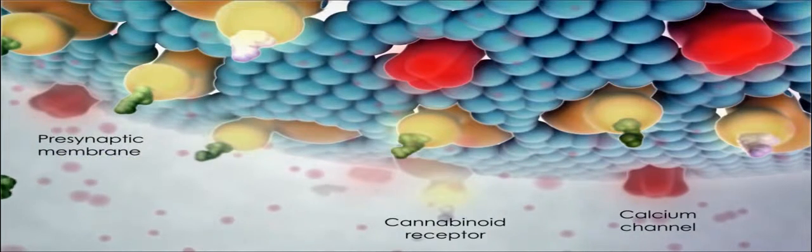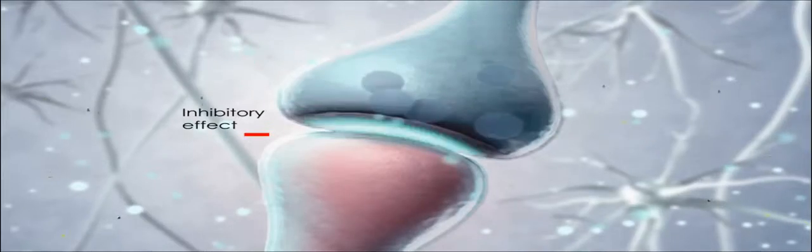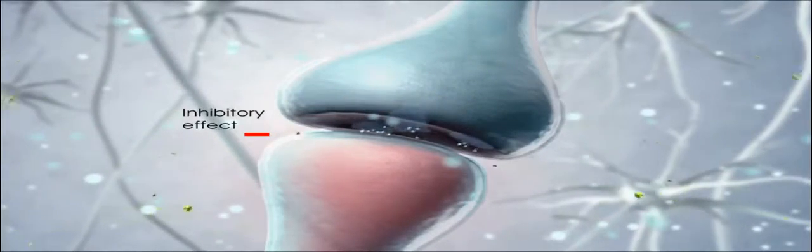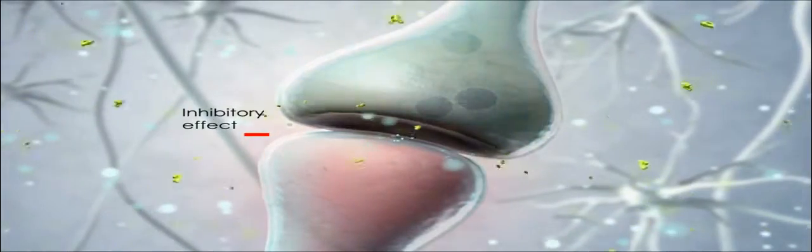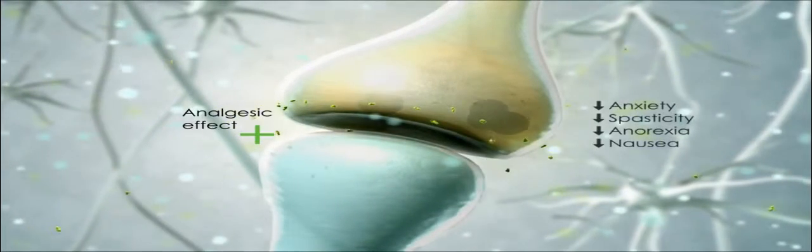Exogenous cannabinoids from the bloodstream bind to cannabinoid receptors on the presynaptic neuron and mimic the endogenous synaptic modulatory effect by decreasing influx of calcium ions. In this way, pain and other neural processes are modulated.